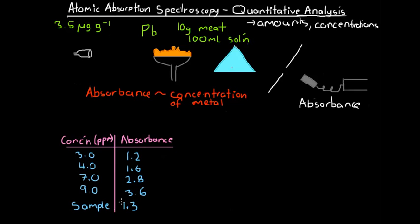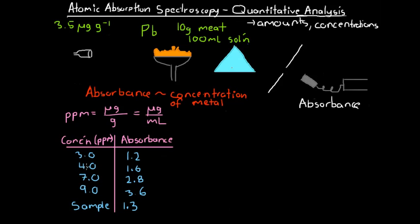We want to figure out where that absorbance of 1.3 fits, so we run some standards. The concentrations are given in parts per million (ppm). One part per million equals one microgram per gram, and since grams and milliliters are considered roughly equivalent, this is also equal to one microgram per milliliter. Our standard solutions have concentrations of 3, 4, 7, and 9 ppm, and we have their corresponding absorbance values. We can now make a calibration graph from this data.